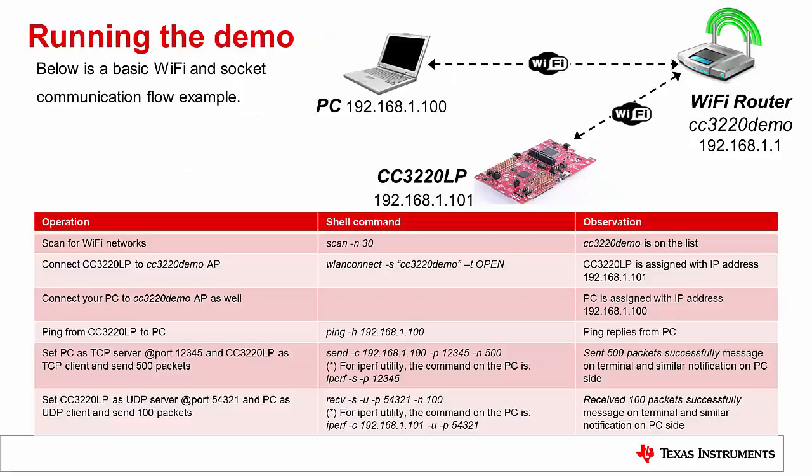There are many networking capabilities in this demo. As an example, we provide a basic Wi-Fi and socket communication. All you need is a CC3220 launchpad and a PC to connect to an AP, and any socket utility installed on the PC. Scan for Wi-Fi networks and connect your launchpad and PC to the same AP. See that the launchpad will ping the PC. Set the PC as a TCP server and the launchpad as a TCP client, and send 500 packets. Follow the shell commands as shown.